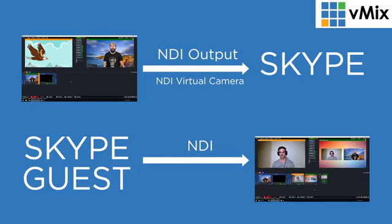Here's a quick picture of what we're going to set up. We're going to go from vMix and send our NDI output via the NDI virtual camera into Skype, and then we're going to take our Skype guest and add them into vMix via NDI. I'll also be linking our knowledge base guide in the description if you'd prefer a more concise method to follow step by step.